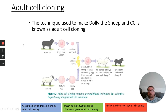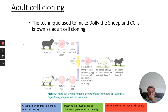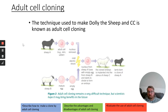Adult cell cloning is the technique used to make Dolly the sheep and, for example, the cat known as CC. With Sheep A and Sheep B — I'd advise you to get the diagram down at the end of this. What you do is remove the adult cell from the sheep you are interested in cloning — the sheep you want to make a copy of — and remove the nucleus from that adult cell.